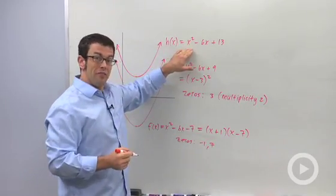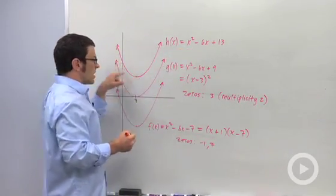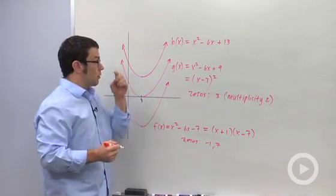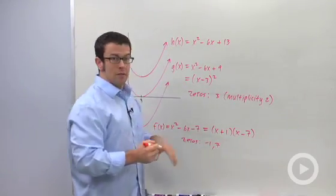And finally, what are the zeros of this polynomial? Now it may not cross the x-axis, but it does have zeros. There are numbers that will make this polynomial 0, but they're imaginary.